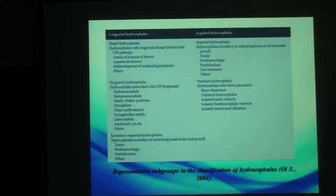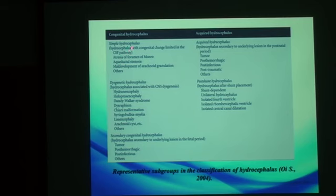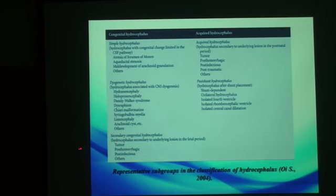Congenital hydrocephalus can be classified as simple, dysgenetic, and secondary. Simple hydrocephalus is due to certain small congenital changes in the CSF pathways, such as atresia, aqueductal stenosis, and so on. Dysgenetic hydrocephalus is hydrocephalus associated with CNS dysgenesis, such as hydranencephaly or holoprosencephaly. Lastly, secondary congenital hydrocephalus is hydrocephalus secondary to certain underlying lesions in the fetal period, such as tumor, post-hemorrhagic, or post-infectious causes.